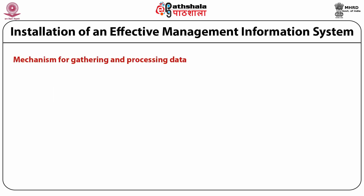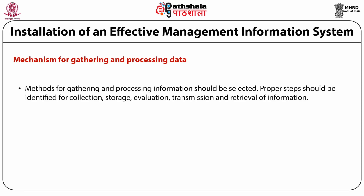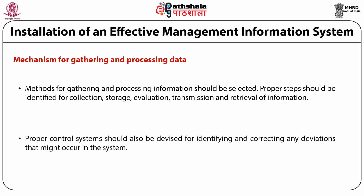The next step involves the mechanism for gathering and processing data. The methods for gathering and processing information should be selected properly. Proper steps should be identified for collection, storage, evaluation, transmission, and retrieval of information. Proper control systems should also be devised for identifying and correcting any deviations that might occur in the system.